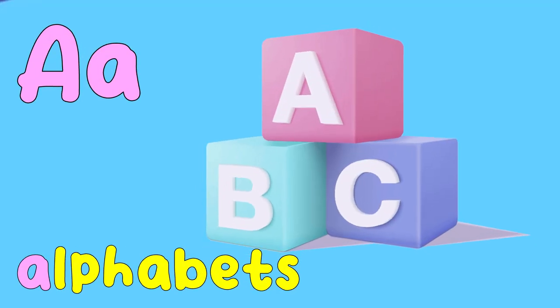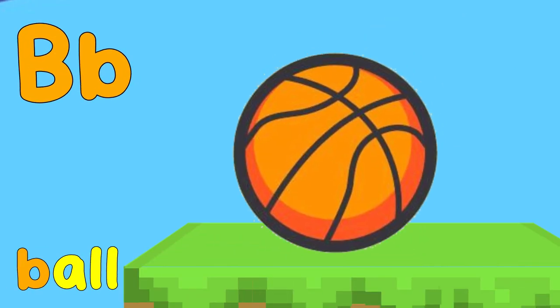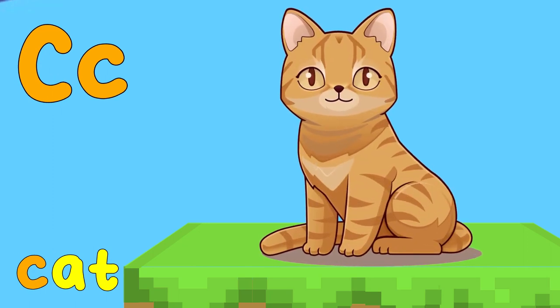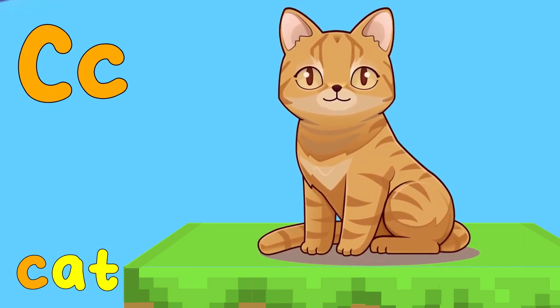A is for alphabets, eh, eh, eh. B is for ball, b, b, b. C is for cat, k, k, k.